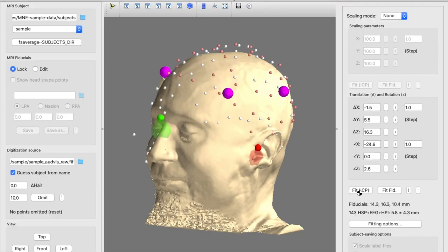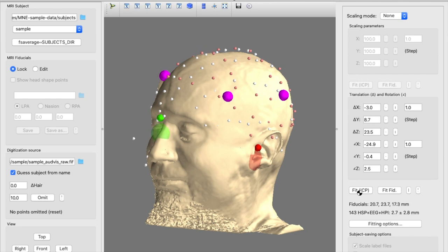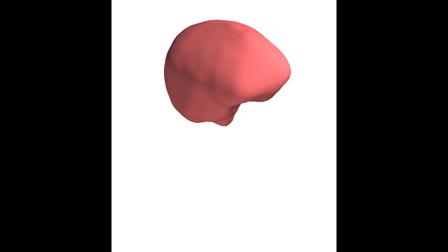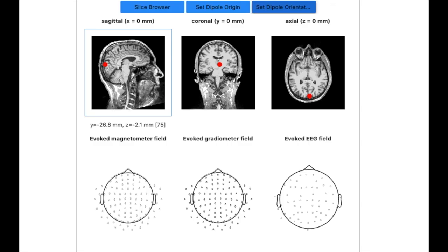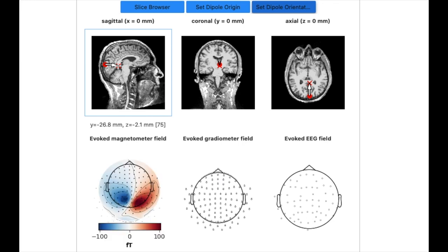And when it's time to localize the actual sources in the brain, perform co-registration between your sensors and an MRI scan, construct BEM models, define a source space, and compute the lead field.